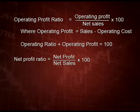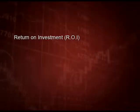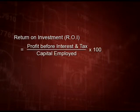The next ratio is net profit ratio: net profit upon net sales into 100, where net profit is always profit after tax. This ratio reflects the overall efficiency of the company and is very important for investors who want to know how much net profit the company is earning. The next ratio is return on investment, popularly called ROI. The formula is profit before interest and tax divided by capital employed into 100. This ratio reveals the efficiency and best utilization of money invested by both owners and outsiders. Returns should always be more than the interest rate being paid to debenture holders and long term loan providers.